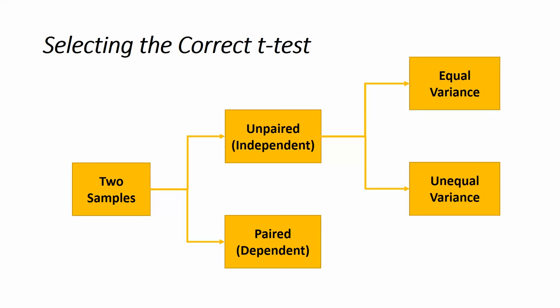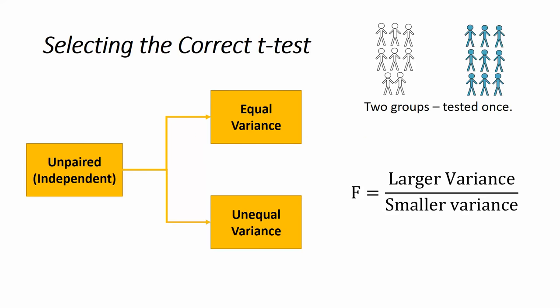Let's take a look at unpaired or independent t-tests first. We have to determine whether the variance is equal or unequal between the two samples. What we should do is calculate the variance for both groups and then use that in a simple F-statistic formula. Our F-statistic is equal to the larger variance divided by the smaller variance. Values closer to one indicate equal variance, and values that deviate considerably from one indicate unequal variance between the two samples.